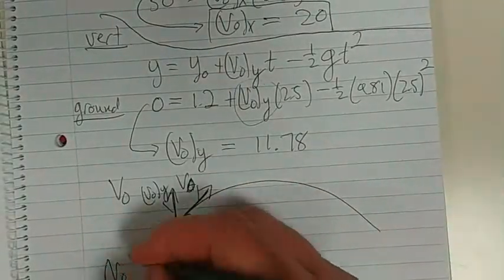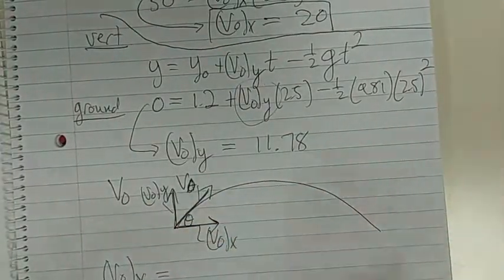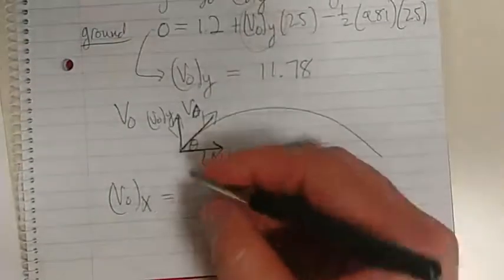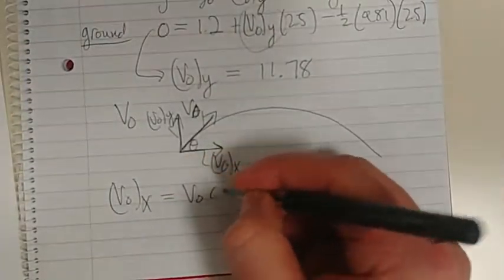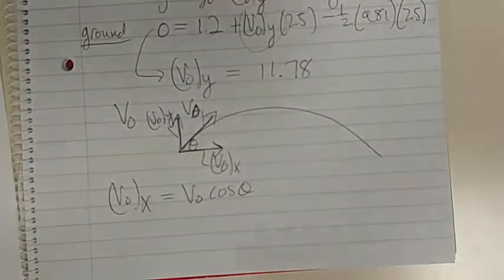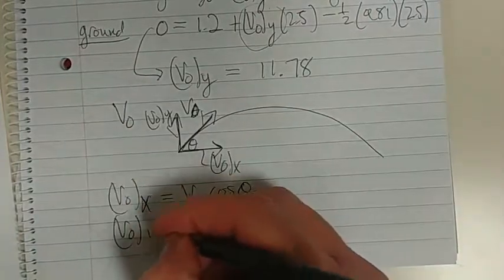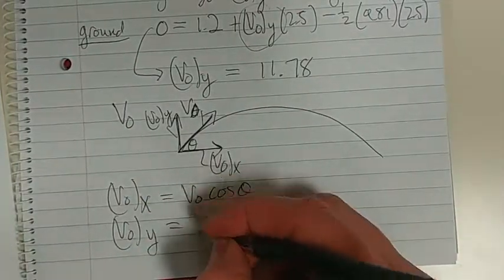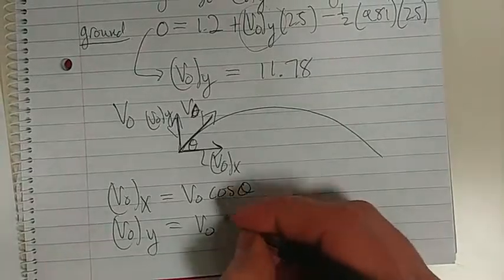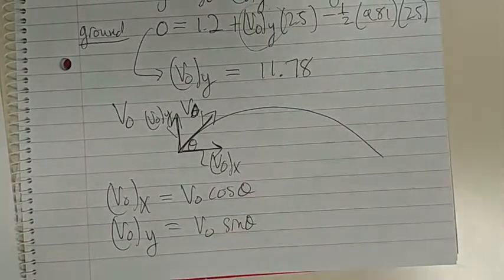What is V0X? That is my original velocity cos theta. And what is V0Y? It is my original velocity sin theta.